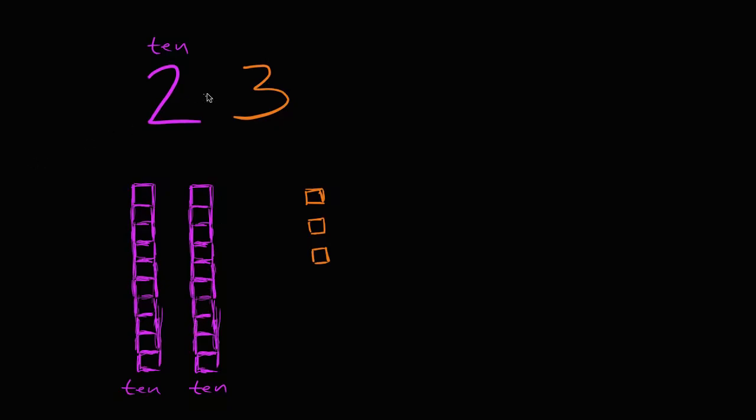Now this three is in the ones place, and it represents three ones. We see them right over here. One, two, three blocks. And of course, if you had three ones together with two tens, these two tens represent 20, and these three ones represent three, so you get 23.